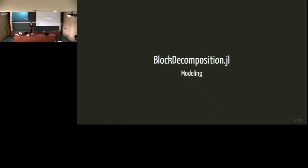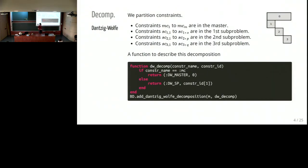Let's start with block decomposition. Several complex combinatorial problems have a block diagonal structure. The blocks represent subproblems, and the main block up there contains linking constraints. The subproblems can be solved independently, and the linking constraints ensure that the combination of the solutions of the subproblems is feasible. For instance, in the generalized assignment problem, for each machine we have a knapsack problem. The linking constraints ensure that all jobs are assigned to a machine. Another example is the vehicle routing problem: for each vehicle we compute a tour, and the linking constraints ensure that all customers are visited.